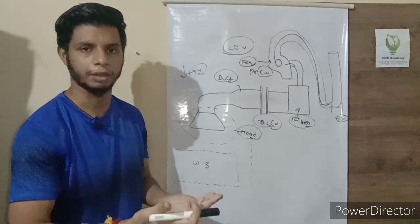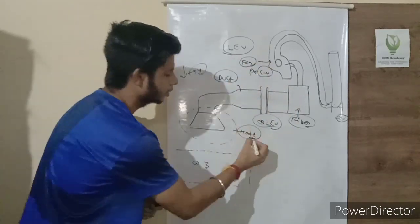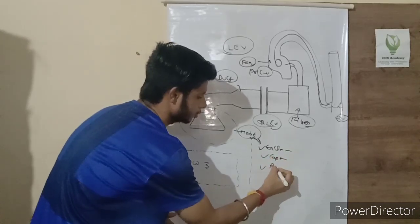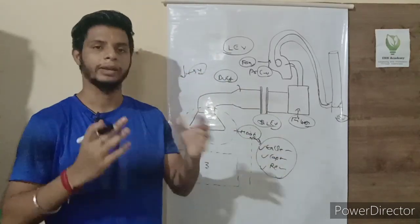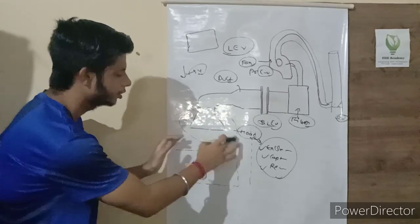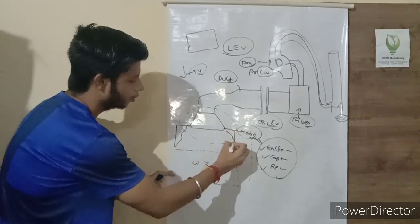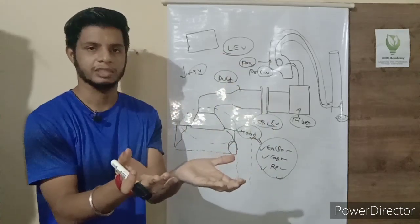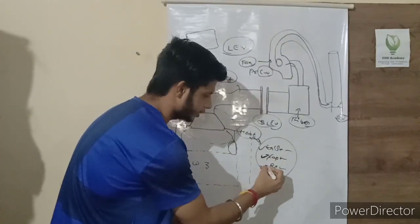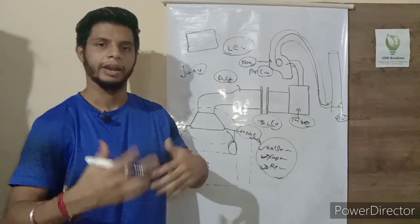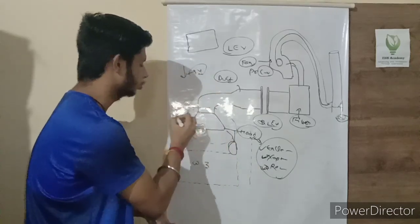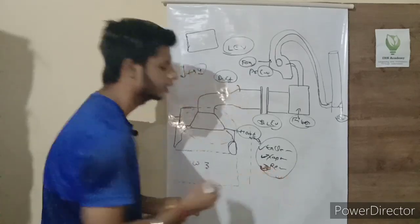Each part is crucial — if one part is not properly working or is damaged, it can affect the overall performance of the system. There are generally three types of hoods used in LEV: enclosing hood, capturing hood, and receiving hood. An enclosing hood is one in which the full work process is enclosed — covered from all sides — with only a limited opening for hands and visibility.